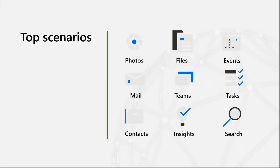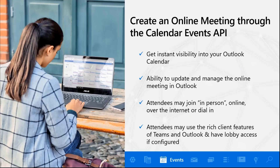When you're trying to create an online meeting, one option is the calendar events API. What that gives you is instant visibility into your Microsoft Outlook calendar. So if it's important to you that the online meeting you're creating is visible inside that person's Outlook calendar, you get that. The ability to update and manage the online meeting experience in Outlook is another benefit — we'll talk about the meeting lobby a little later. Attendees may join in person, online, over the internet, or via dialing. There are different modalities. And if you have the rich client features inside Microsoft Teams or Outlook, those are areas where you get the full enriched feature set.